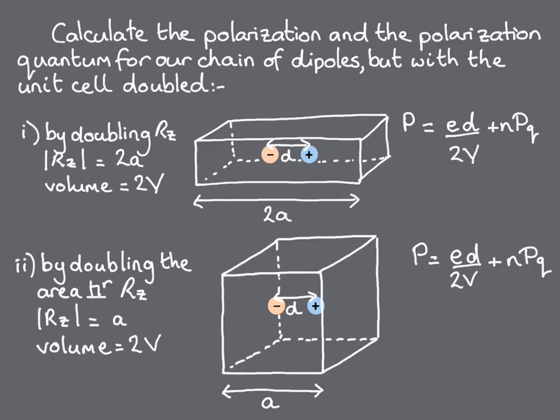For the first case, the polarisation quantum, which is defined to be E times the lattice vector in the direction of the polarisation divided by the volume, is E times 2A over 2V, which is EA over V. This is the same as for our original chain, because both the lattice vector and the volume of the unit cell have doubled.